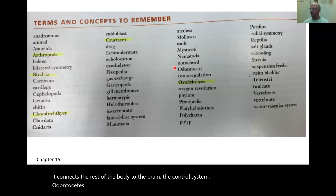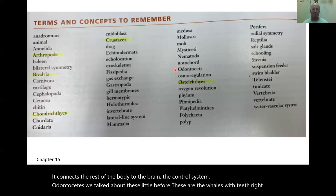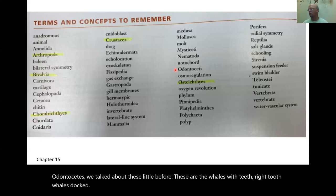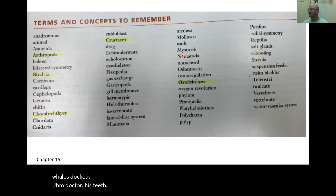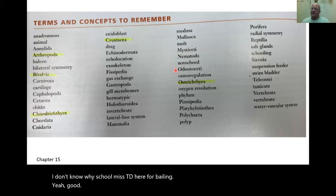Odontoceti — we talked about these before. These are the whales with teeth — tooth whales. Odonto means teeth. Killer whales are a good example of odontoceti.